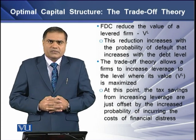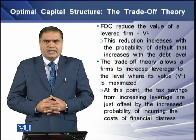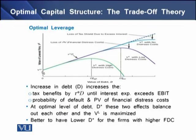An increase in debt can increase the tax benefit — the tax shield — until the interest expense goes beyond the firm's EBIT. This increase in debt also increases the probability of default and the present value of financial distress cost. At the optimal level of debt, these two effects balance out each other and the levered firm value is maximized. If the firm has higher financial distress cost, it is better for the firm to keep its debt at a lower level.